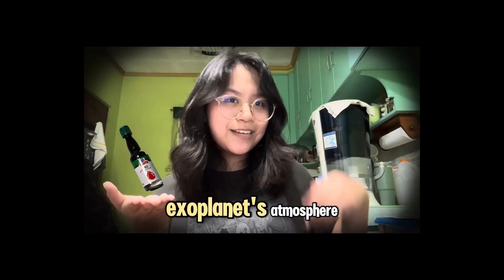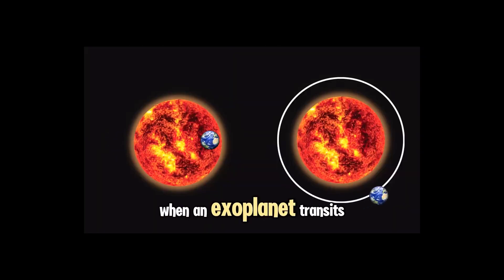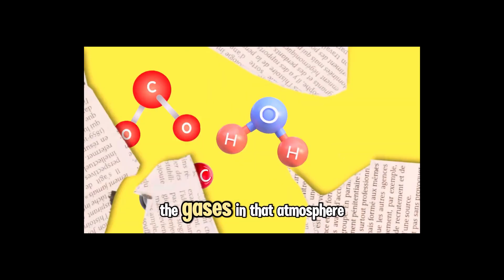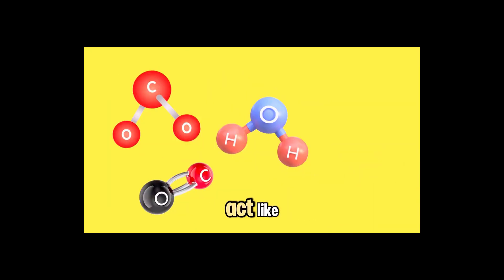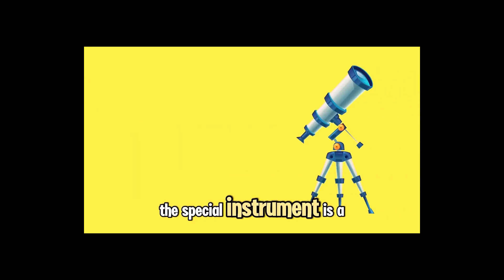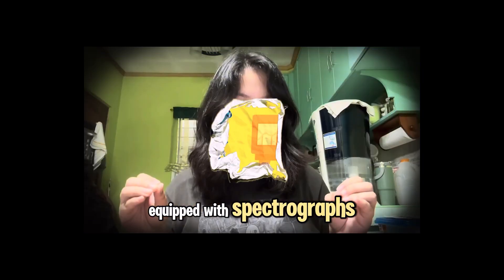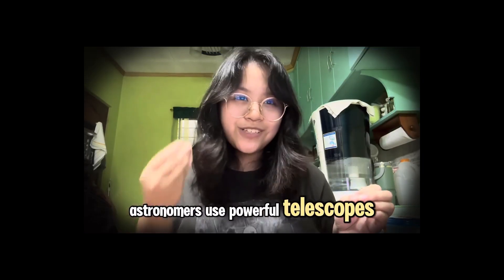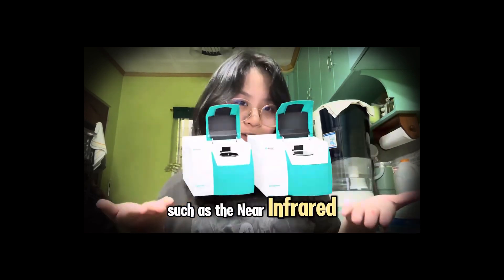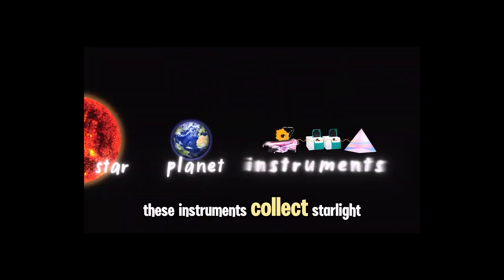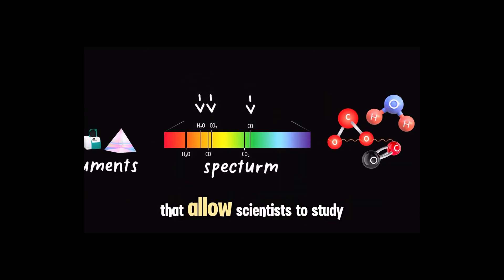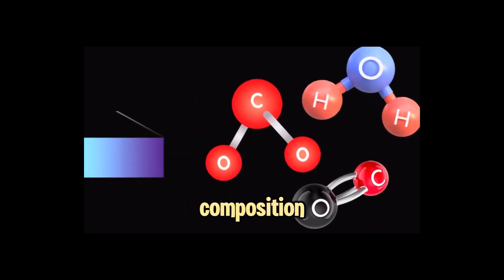The food coloring is the exoplanet's atmosphere. When an exoplanet transits, a tiny amount of starlight passes through its atmosphere. The gases in that atmosphere act like the food coloring, absorbing specific wavelengths of light. The special instrument is a telescope equipped with spectrographs. Astronomers use powerful telescopes such as Hubble and James Webb, which carry instruments such as the near-infrared spectrometer. These instruments collect starlight, break it down to create the spectrum, revealing unique chemical fingerprints that allow scientists to study the atmosphere's composition.